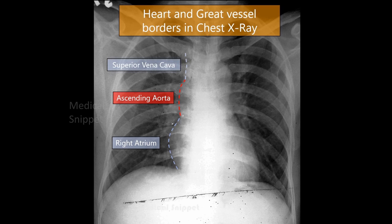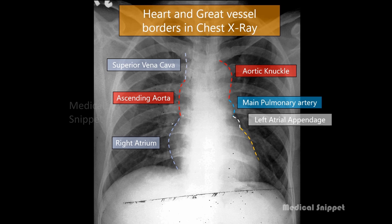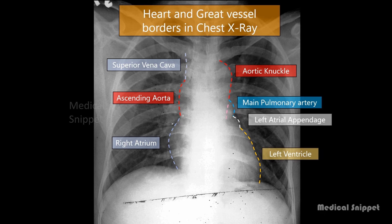The left border of the cardiomediastinal silhouette, from top to bottom, is formed by the aortic knuckle, the main pulmonary artery, the left atrial appendage, and the left ventricle. One can also see the outline of the descending thoracic aorta.